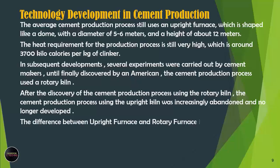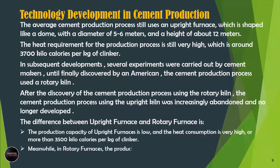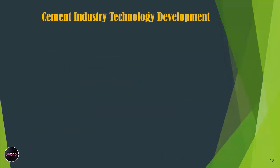The difference between shaft kiln and rotary kiln is as follows. The production capacity of the shaft kiln is low, and heat consumption is very high — more than 3,500 kilocalories per kilogram of clinker. Meanwhile, in rotary furnaces, the production capacity can be higher, with lower heat consumption under 2,000 kilocalories per kilogram of clinker.